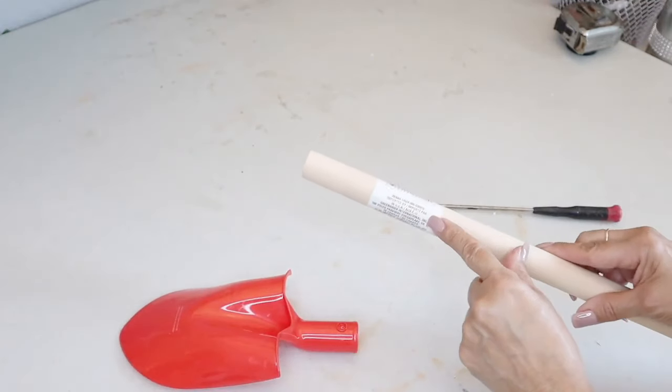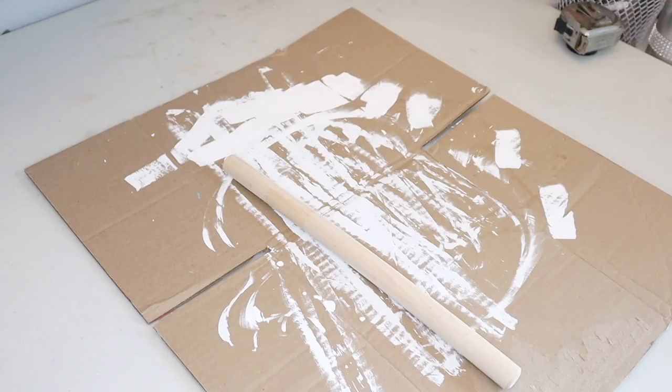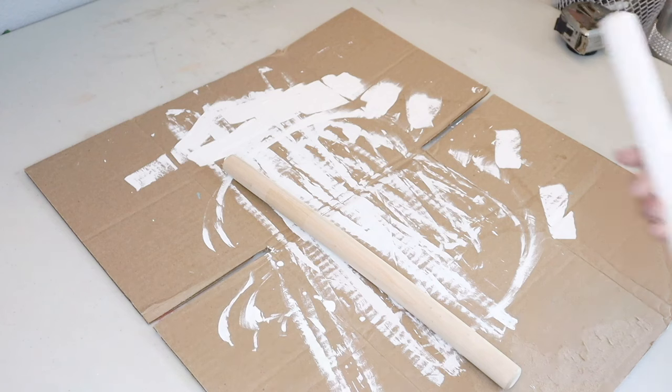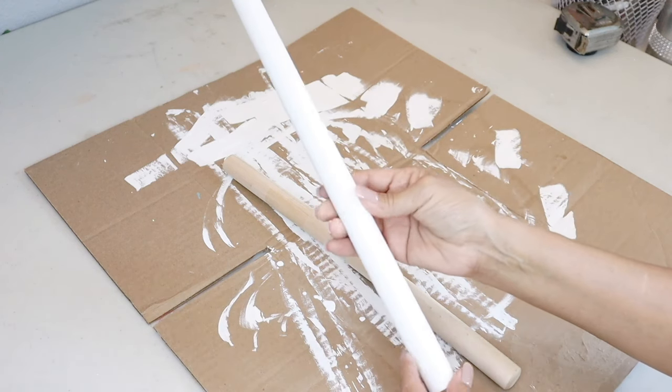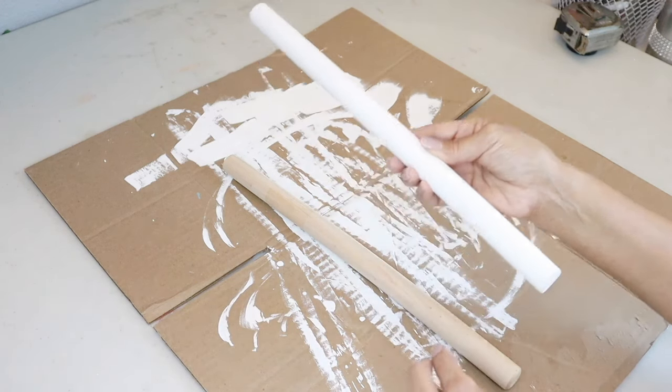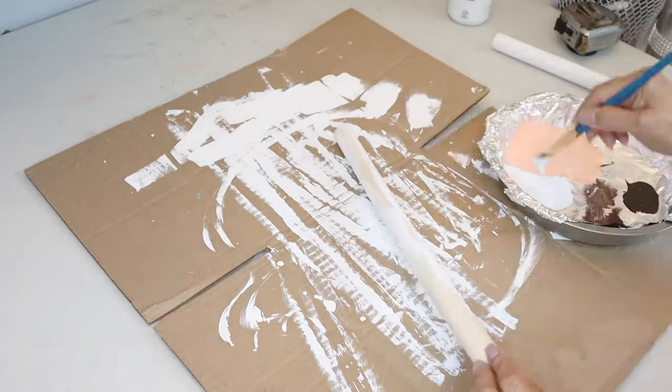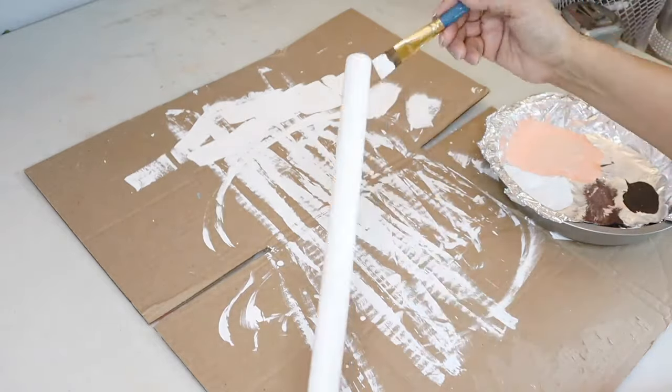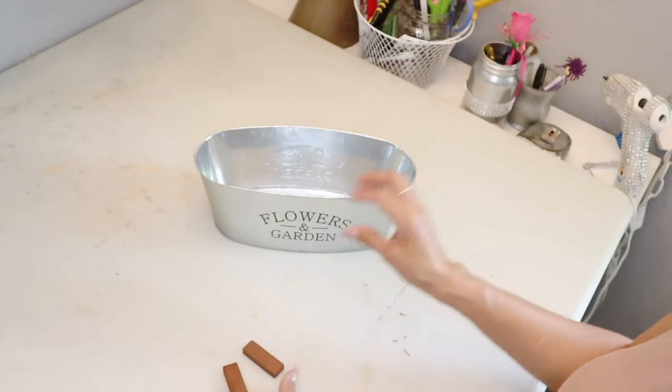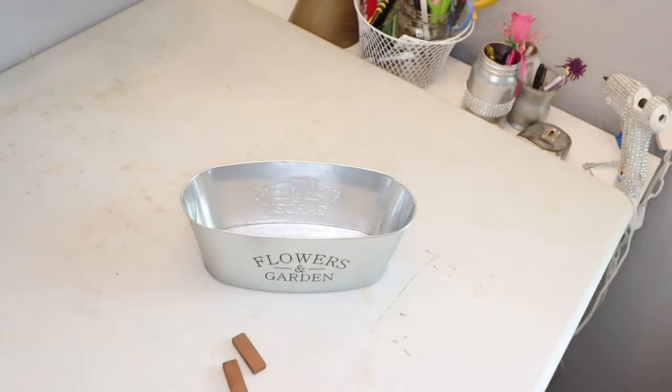And I'm also going to remove the label off the handle. Now I'm going to paint them with the white chalk paint. I already painted this other one from a previous project. I'm only going to give it one coat of paint and then let it dry. Next, I'm going to be painting these two pieces from the tower game and also the planter.